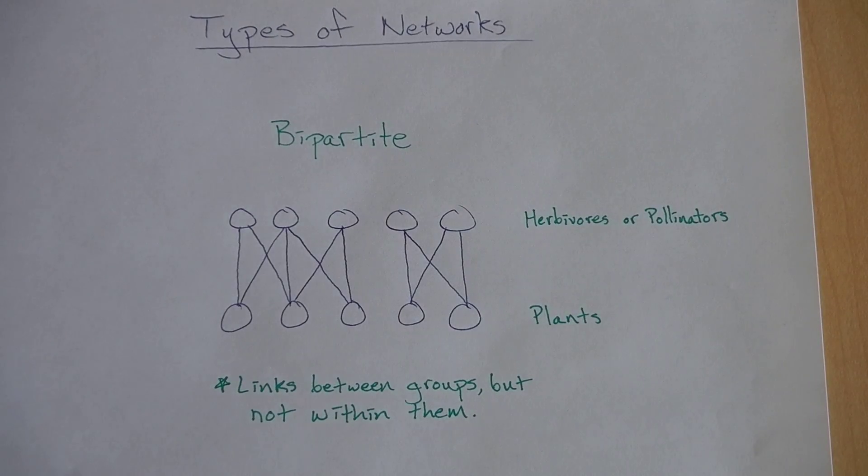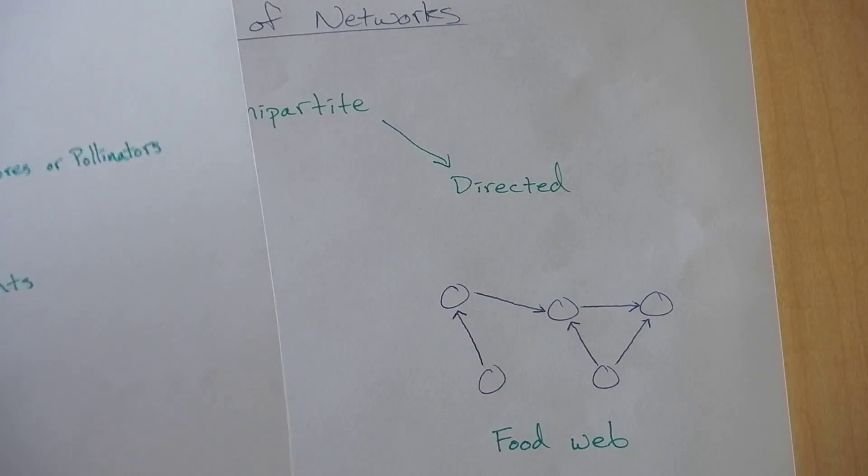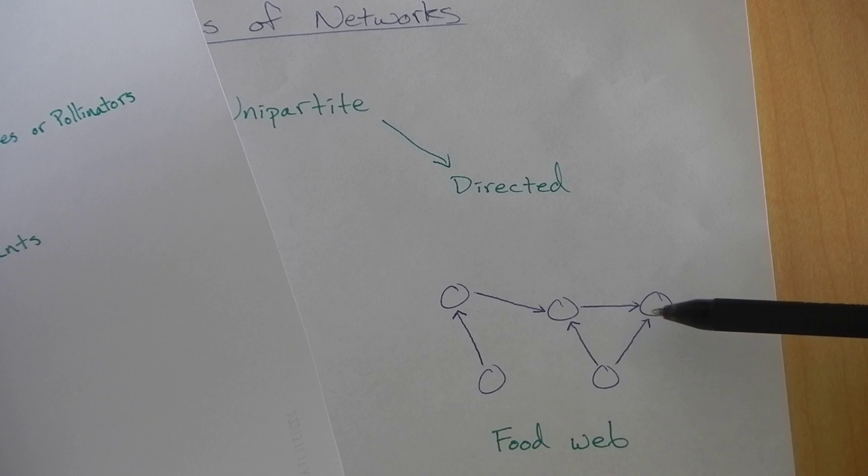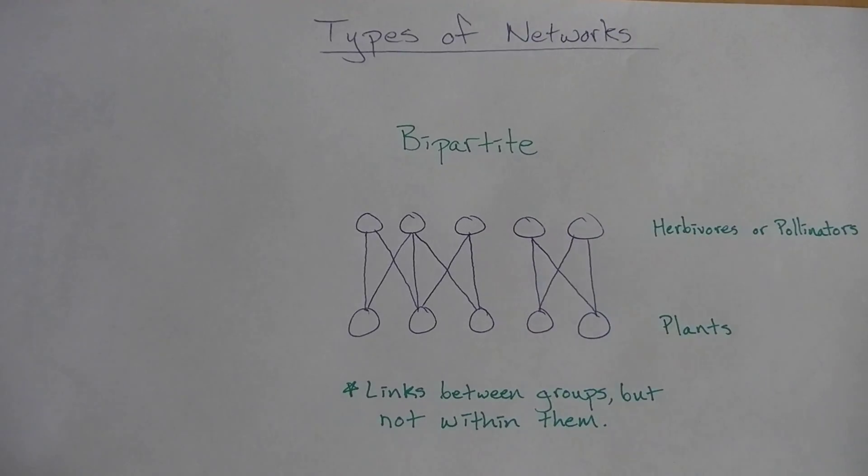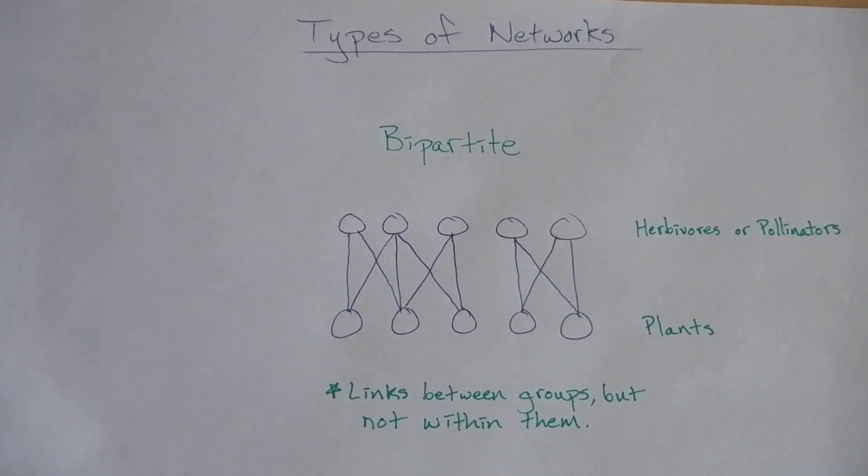Whereas if we look back at the unipartite directed network, you can see there's no group structuring here—all these possible species could potentially be linked to each other. The bipartite network is more structured: no links between species within a group, only links between groups.